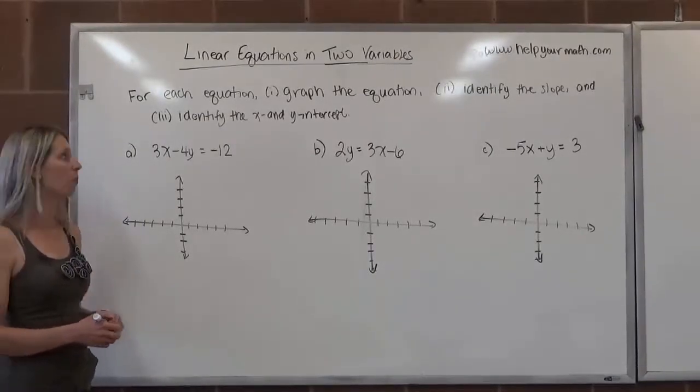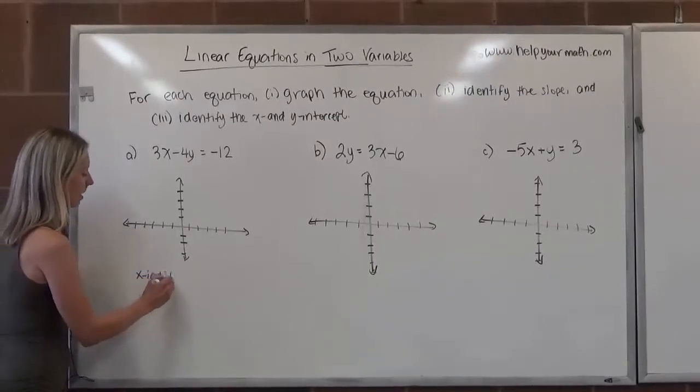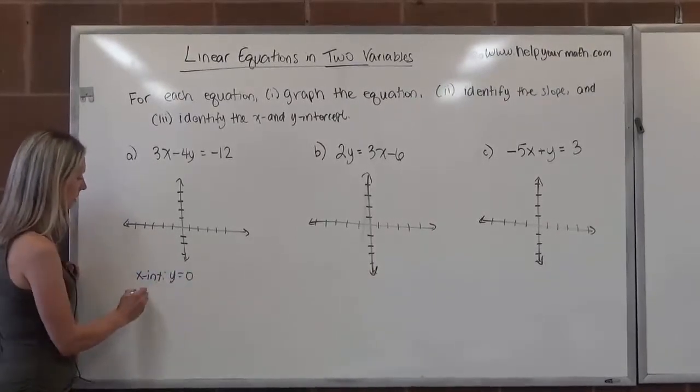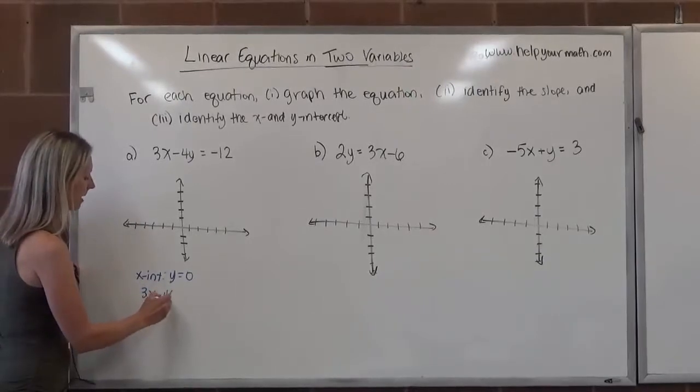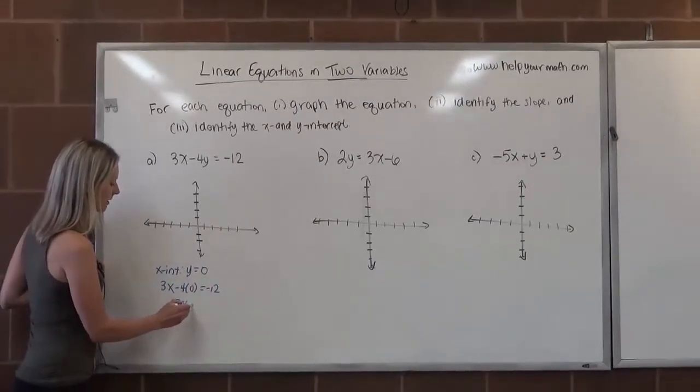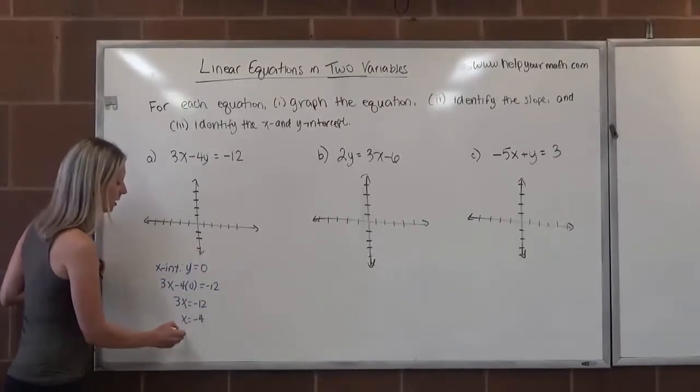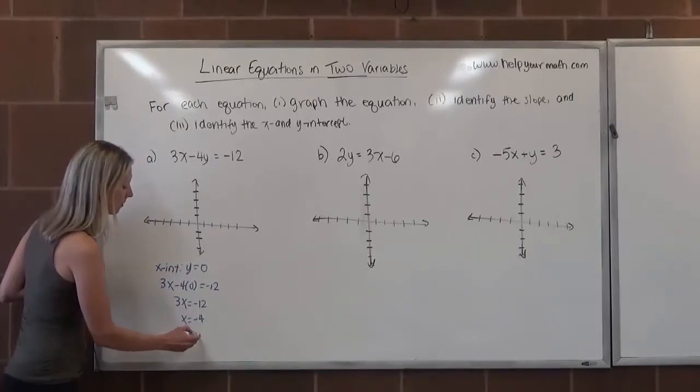We're going to find the x intercept. What that means is we're going to plug in 0 for y. So the x intercept, that's when y is equal to 0. So that would be 3x minus 4 times 0 is equal to negative 12. That's 3x equals negative 12. Divide both sides by 3 and we get x equals negative 4. So that's the ordered pair negative 4, 0.